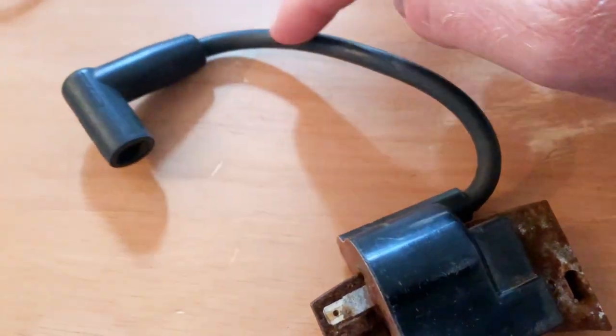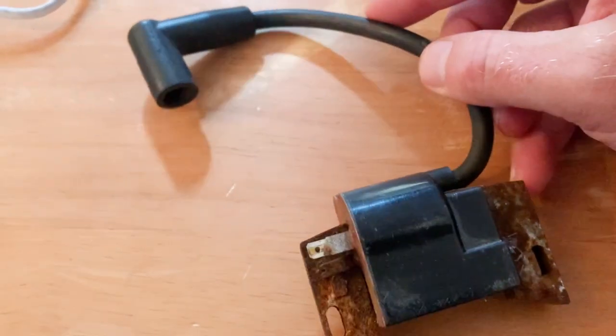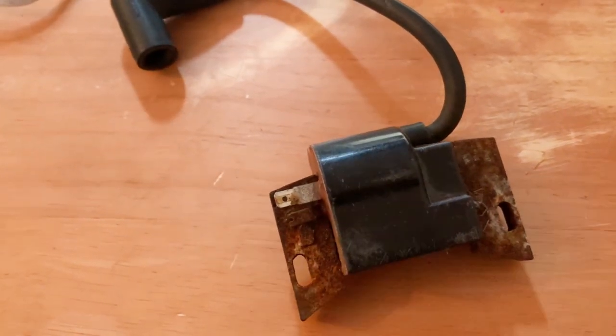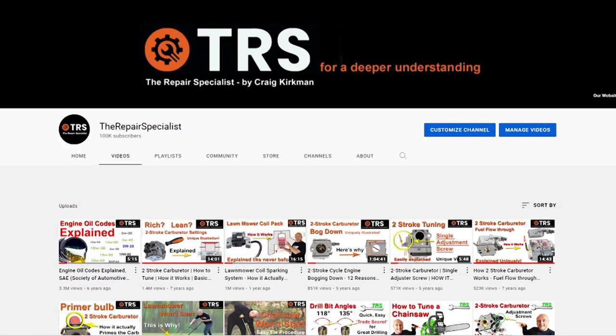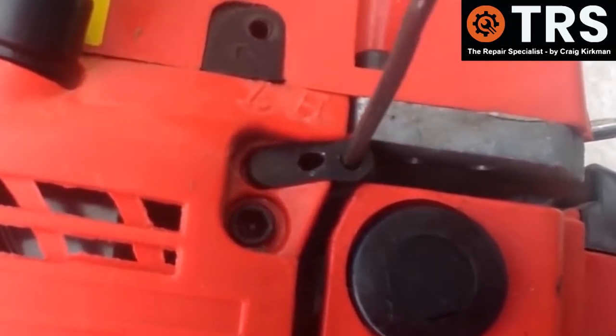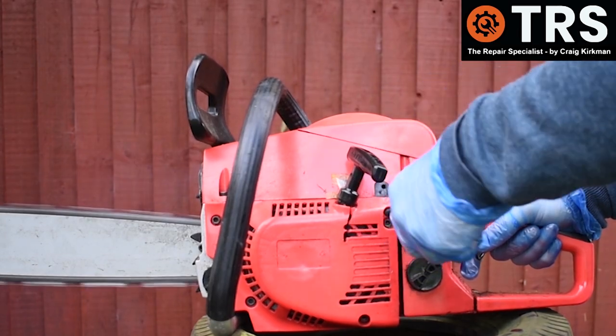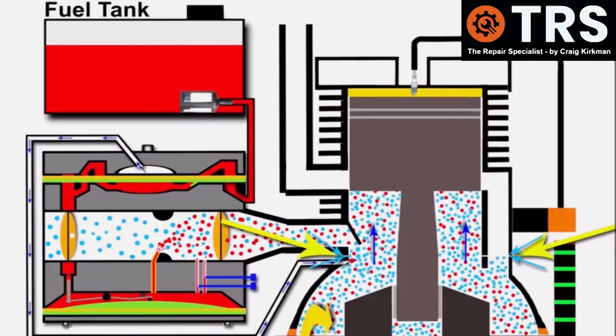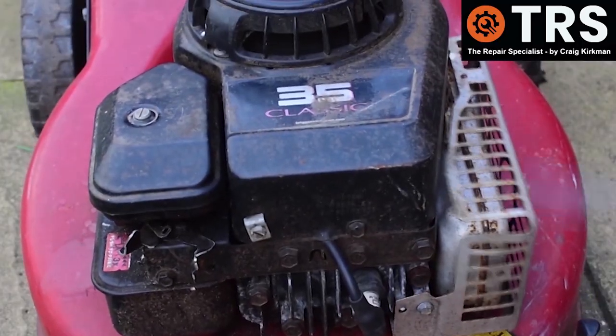An incorrect HT lead or high tension lead can damage the ignition coil and this video will show you why. Welcome to the Repair Specialist channel. I'm Craig, the owner and creator, and having been in the trade for around 30 years, I now make videos relating to the diagnosis and repair of small engines and machinery.